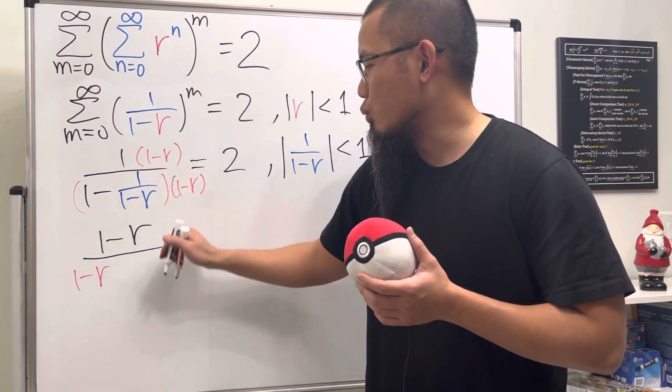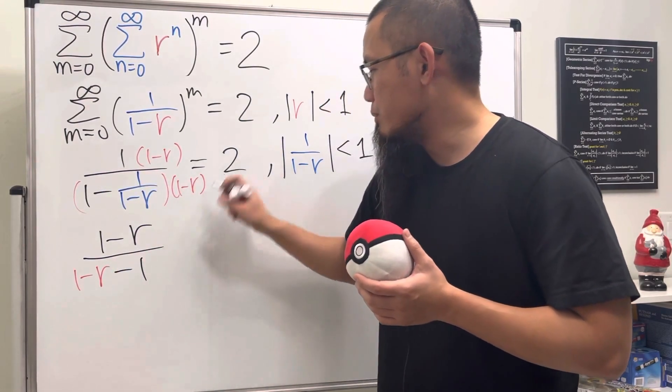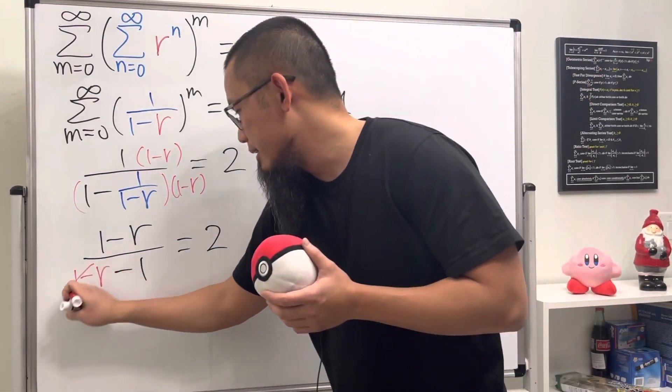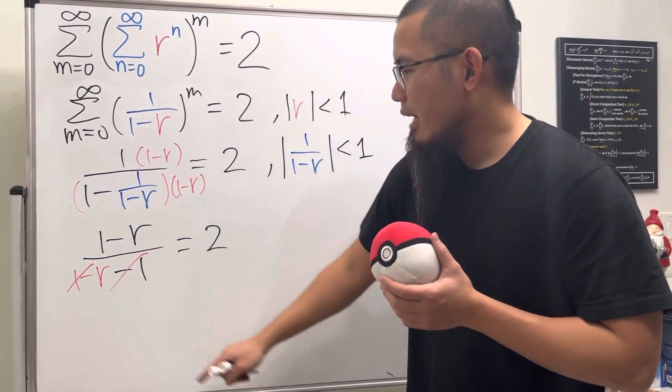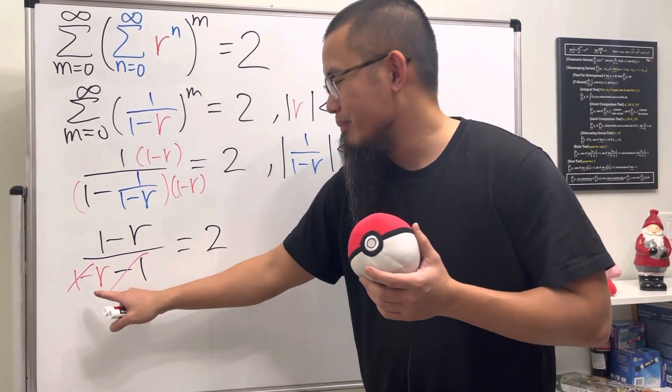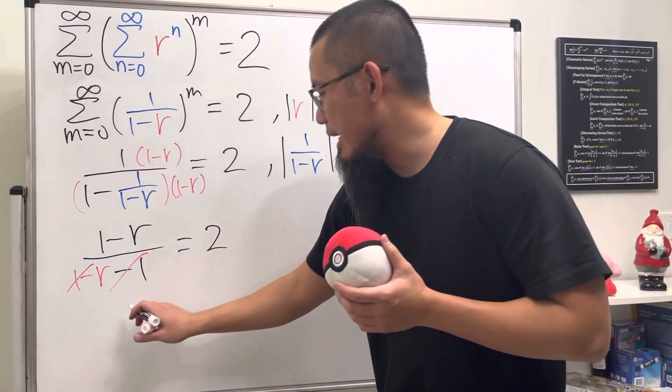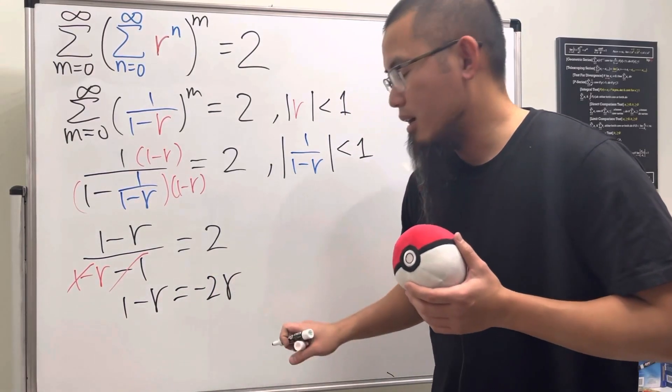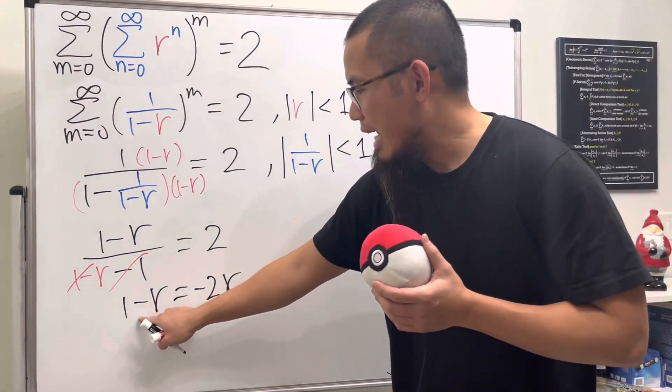They cancel, so we have minus one, and we just make that equal to two. And of course we can just finish this. This one minus one is gone, and then we have negative r on the bottom. Multiply that on both sides, so we get one minus r equals negative two r.